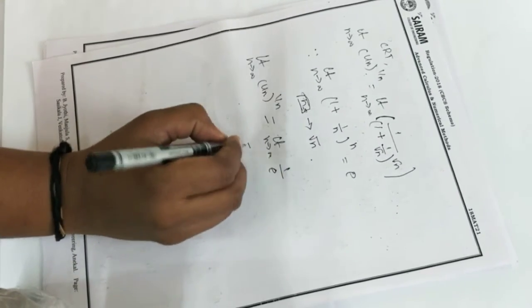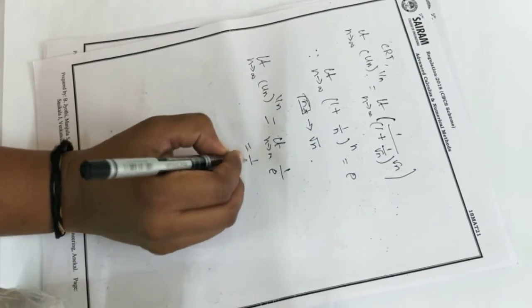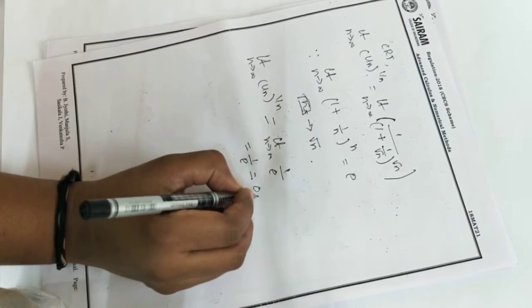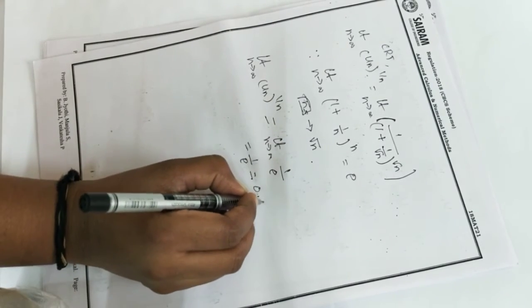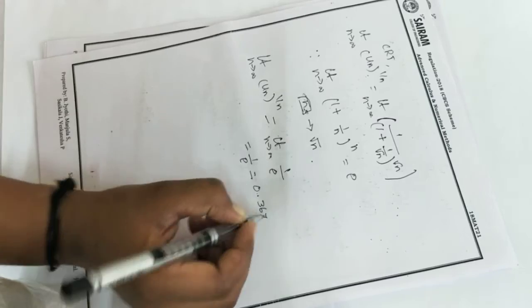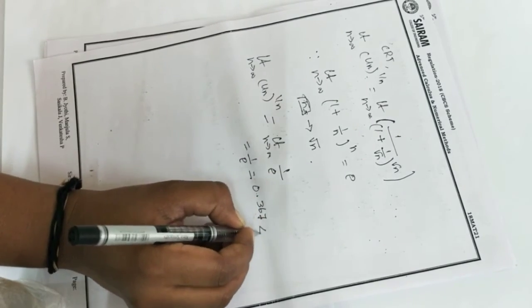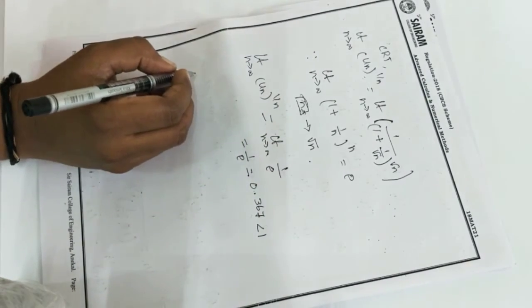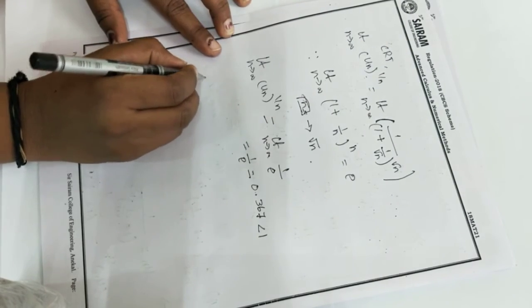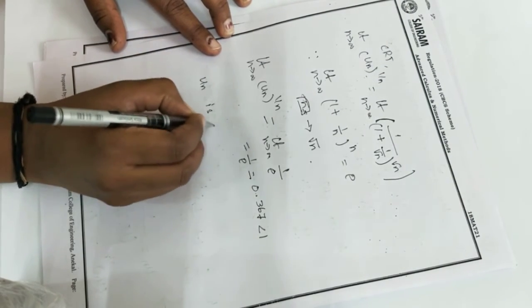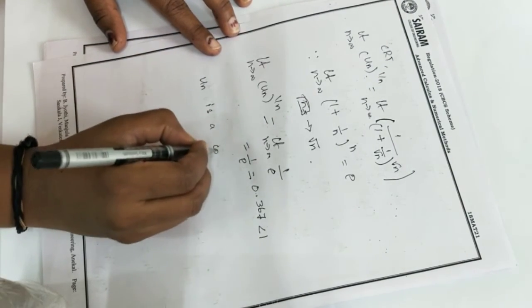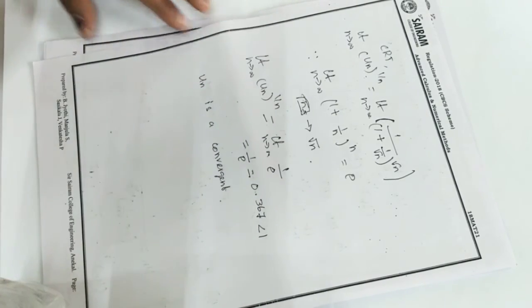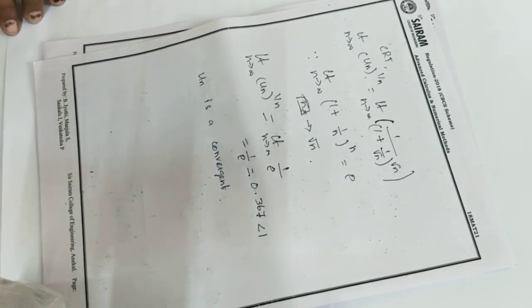The answer is 1/e = 0.367, which is less than 1. Therefore, by Cauchy's root test, the given series Σun is convergent.